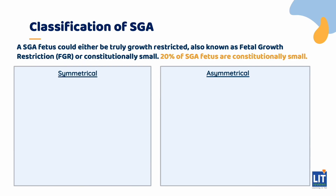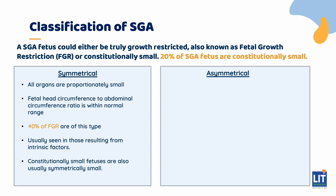An SGA fetus can either be truly growth-restricted, also known as fetal growth restriction (FGR), or constitutionally small. 20% of SGA fetuses are constitutionally small. FGR can be classified into two types — symmetrical and asymmetrical FGR — based on relative size of head to the abdomen. Symmetrical FGR is when all organs are proportionately small. The fetal head circumference to abdominal circumference ratio is within normal range, and 40% of FGR are of this type. This is usually the type seen with intrinsic factors. Constitutionally small fetuses are also usually symmetrically small.